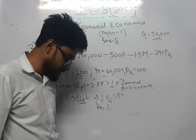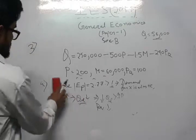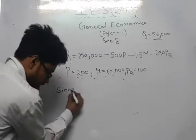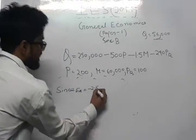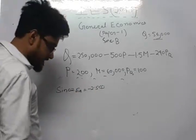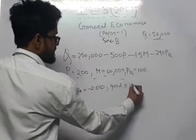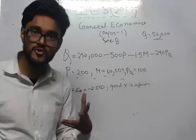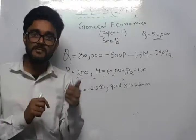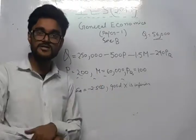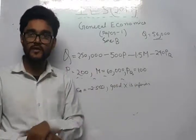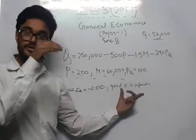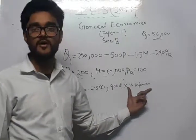The third question asks: is good X normal or inferior? Since EM is negative, which is less than 0, the good X is inferior. For an inferior good, when income increases, demand for that commodity falls — consumers substitute it for other commodities. This is the defining characteristic of an inferior good.